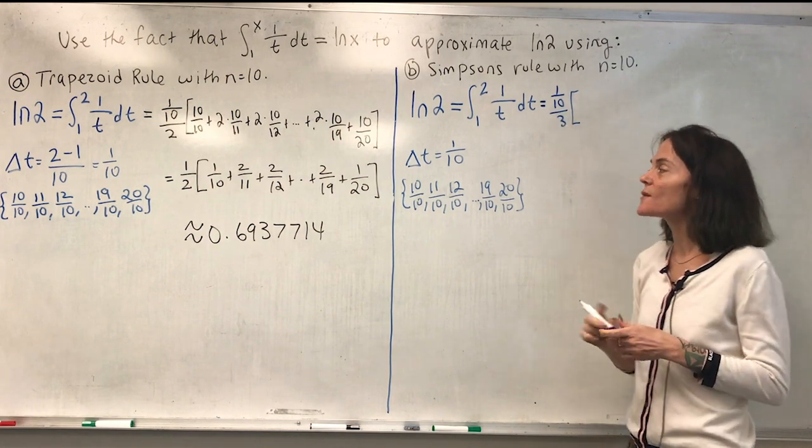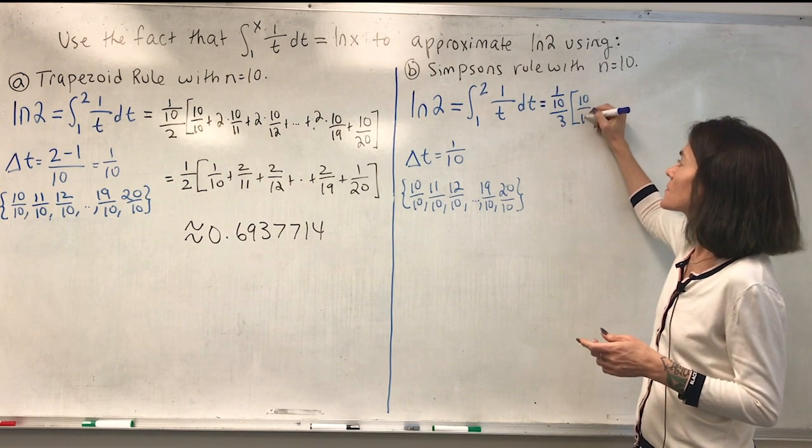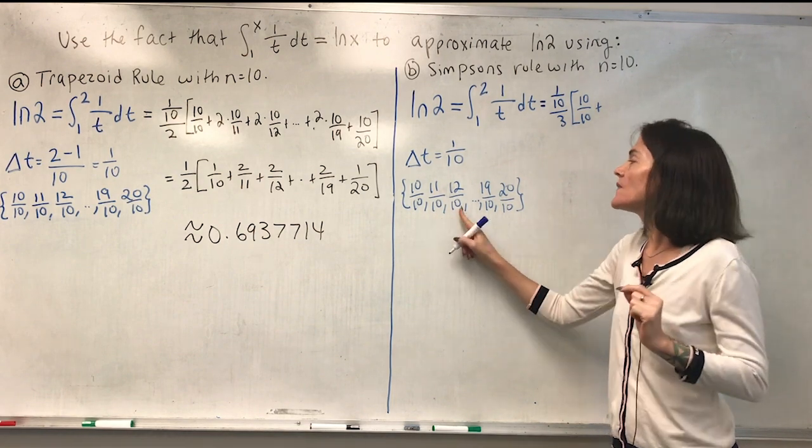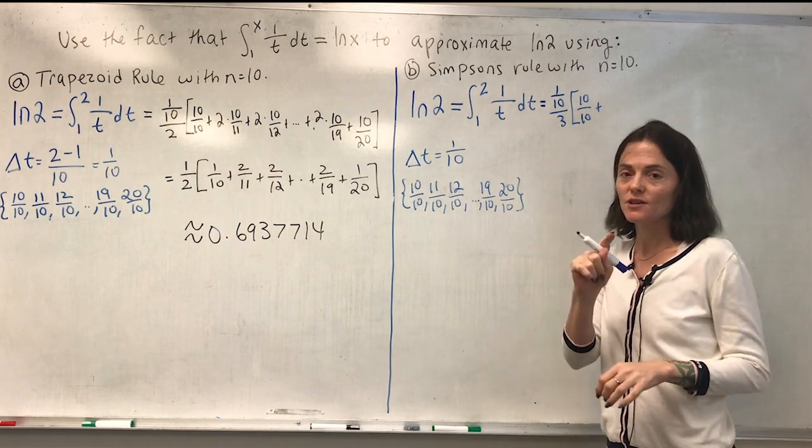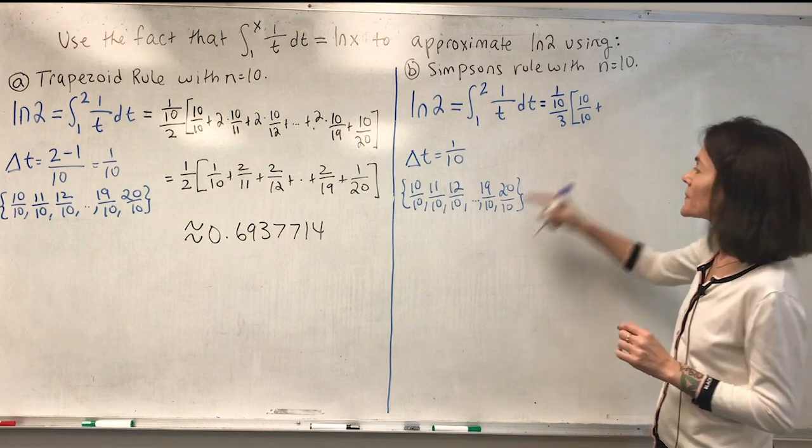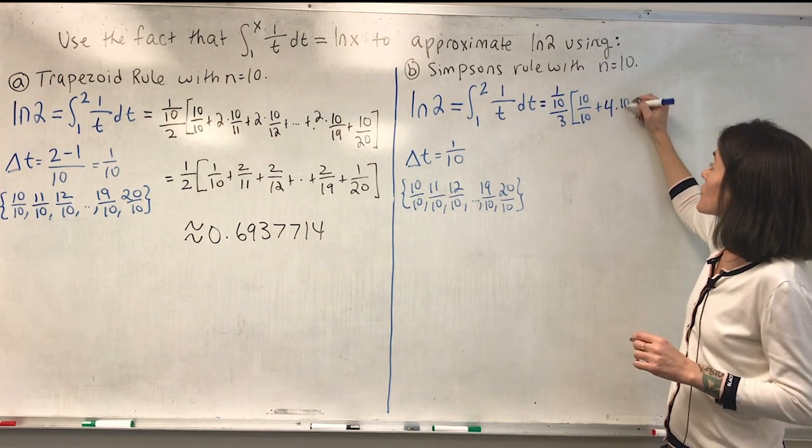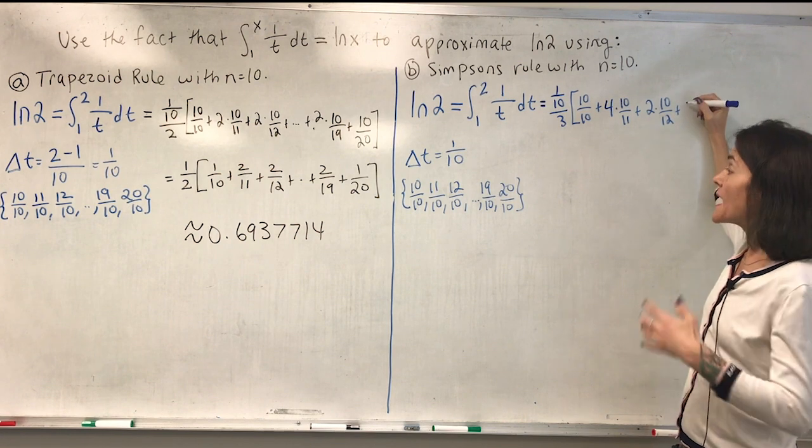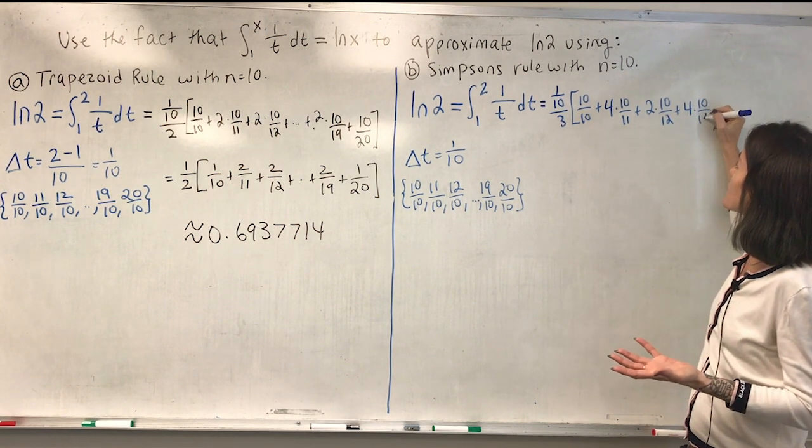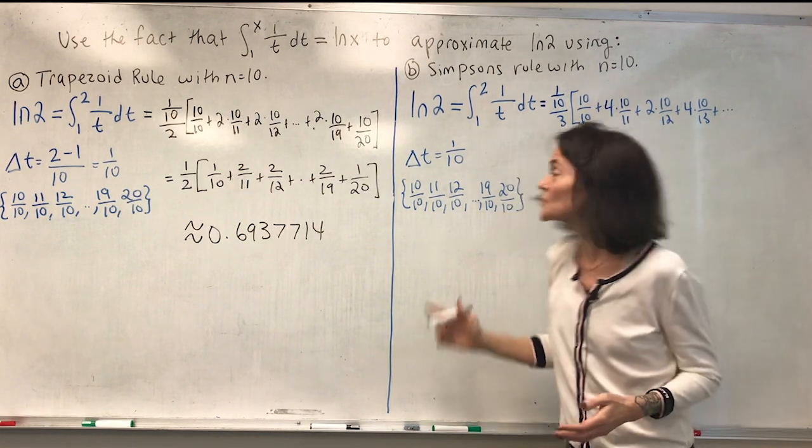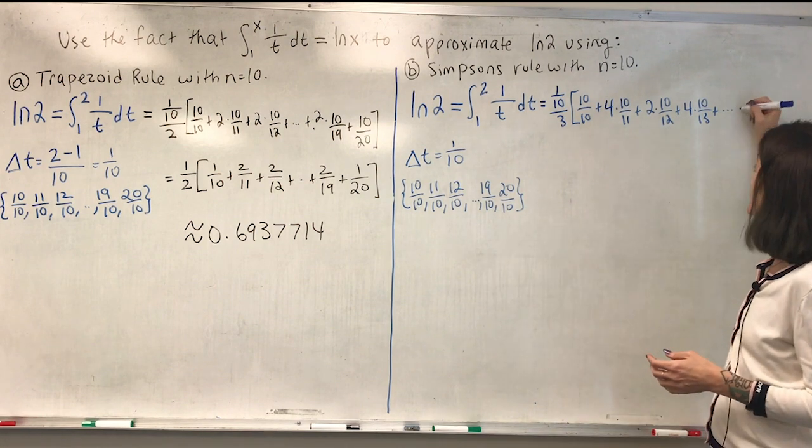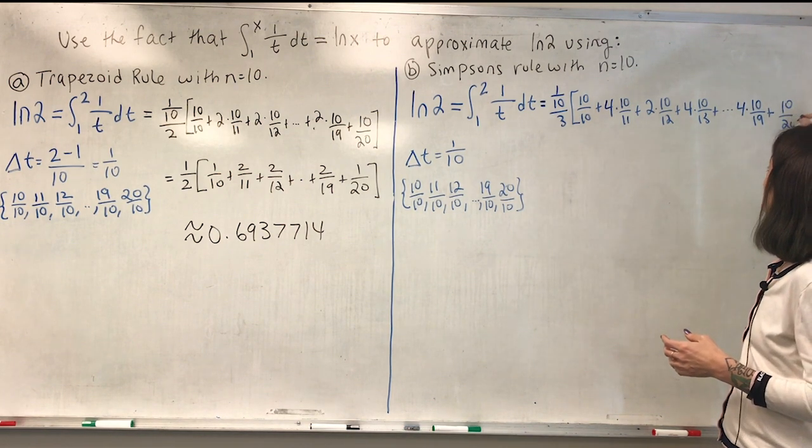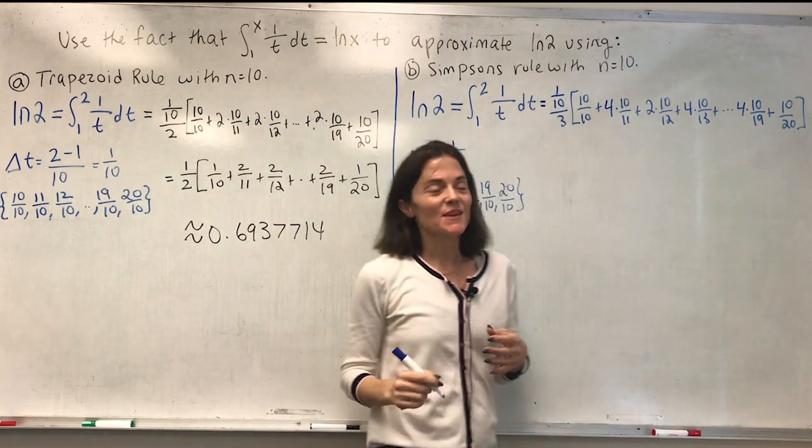And then we start off with f of t0, which again is 10 over 10. But then we have 4, remember that the t_i's where i is odd get 4s in front of them, and the t_i's where i is even have 2s in front of them except for the very last one. So we have 4 times 10 over 11, and then we have 2 times 10 over 12, and then we would have for example 4 times 10 over 13. The next one would be a 2, all the way out. This is t9 which is an odd one, so we have 4 times 10 over 19, plus it's going to be 1 times 10 over 20, and then you know, I can take one step.